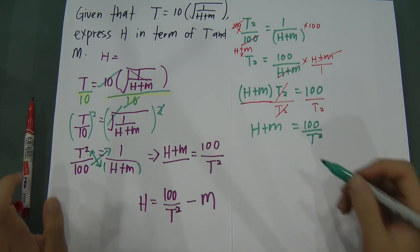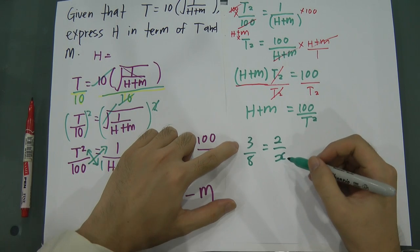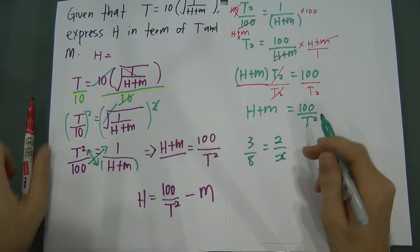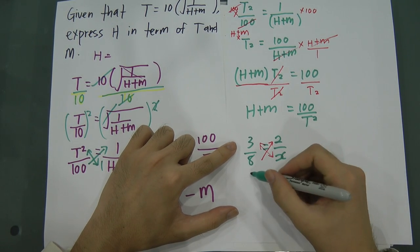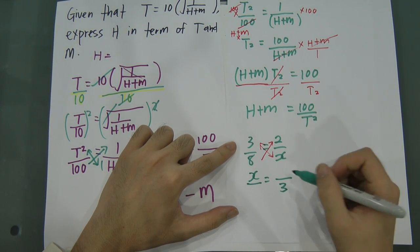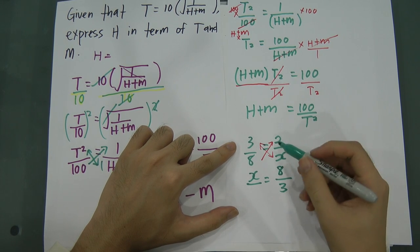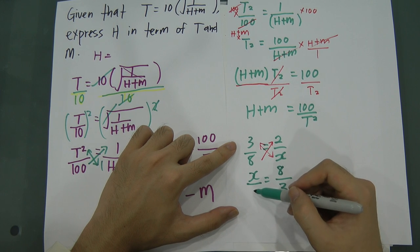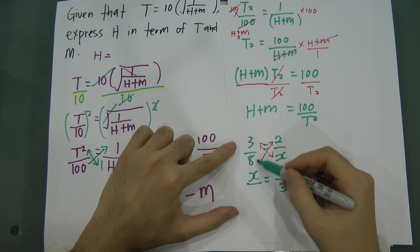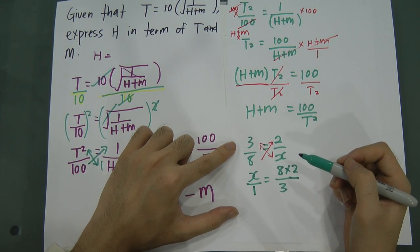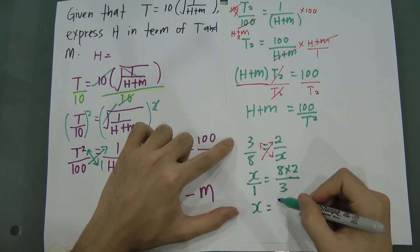Let me show a few more change-places examples. Say you have 3 over 8 equals 2 over x. To find x, I change places: x comes to the top, 3 goes to the bottom, giving x equals 2 times 8 divided by 3. The 2 and 8 multiply together in the numerator because 8 moved up and there is nothing left in the denominator — nothing means 1 — so x equals 16 divided by 3.